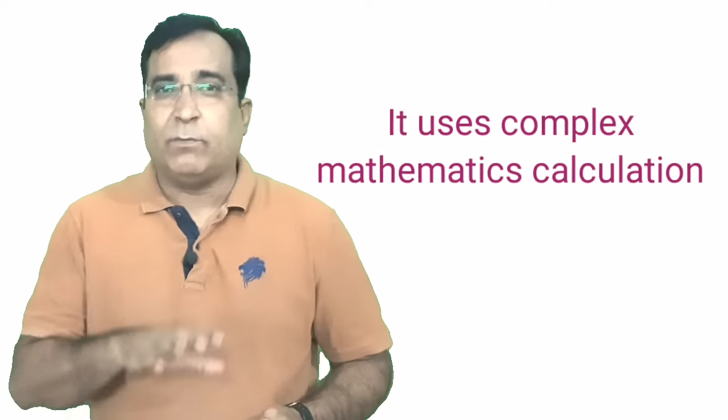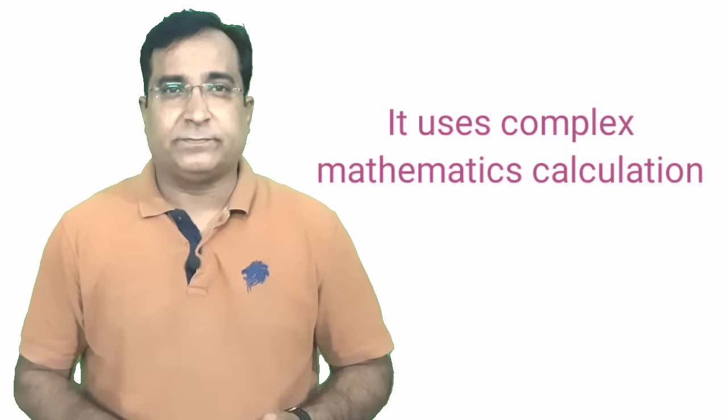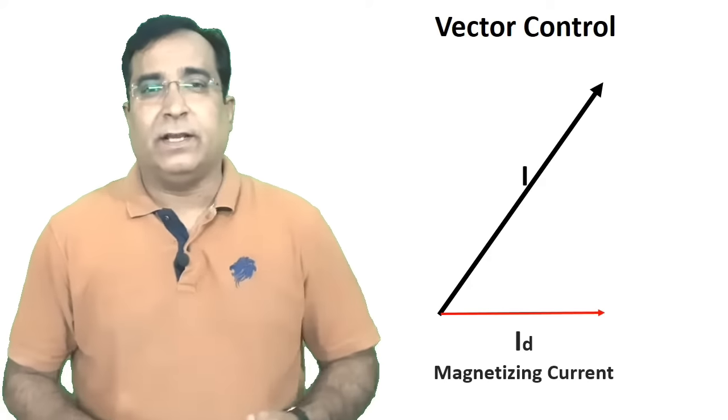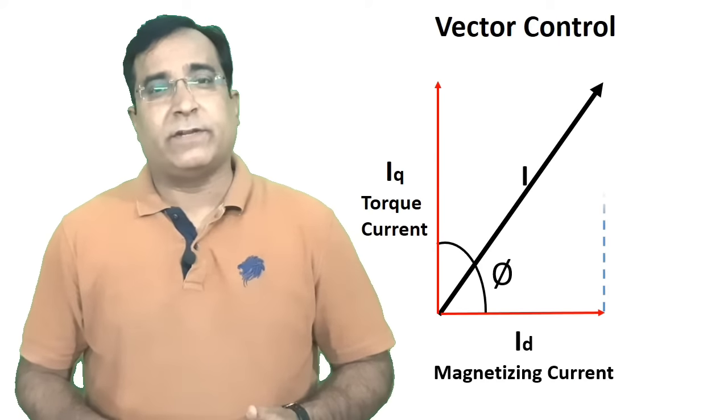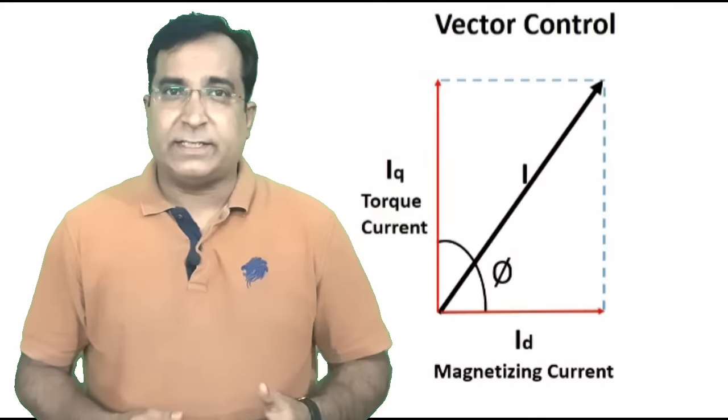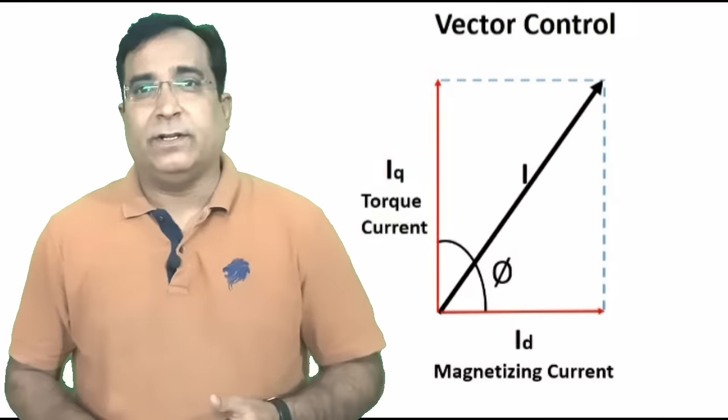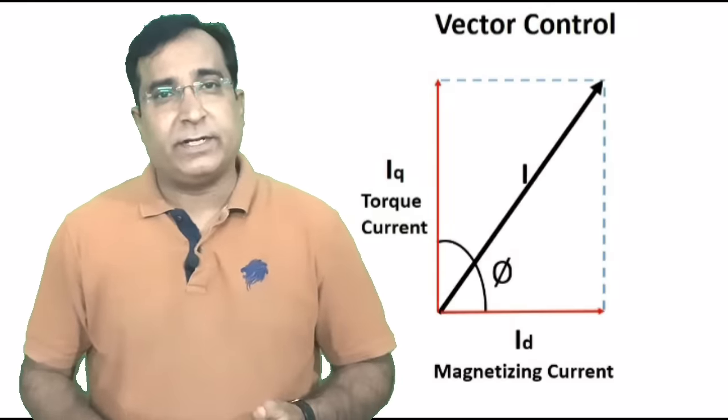Let's try to understand: Suppose we have a stator current I and it has got two components. A component which is responsible for rotating flux, which is called magnetizing current Id. The second component which is responsible for torque generation and is also called torque producing current Iq.